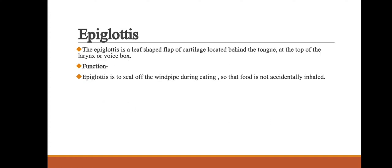We also discuss the epiglottis, which is part of the cartilage. The epiglottis is a leaf-shaped flap of cartilage located behind the tongue at the top of the larynx or voice box. Its function is to seal off the windpipe during eating so that food is not accidentally inhaled.